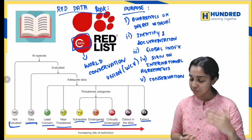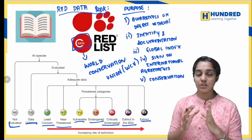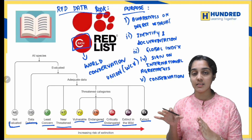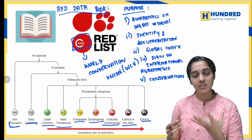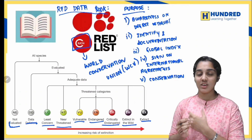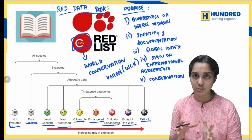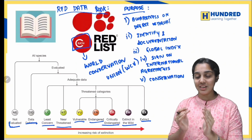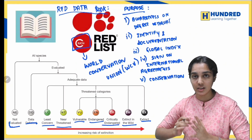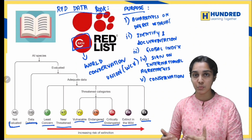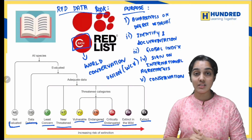Finally, the fifth purpose is conservation strategy — we need to conserve species facing extinction, so conservation strategies are implemented to conserve these species. These are the five important points on the purpose and importance of the Red Data Book. Goodbye students.